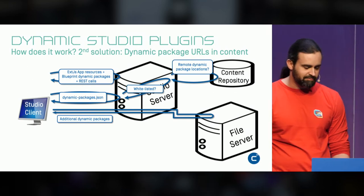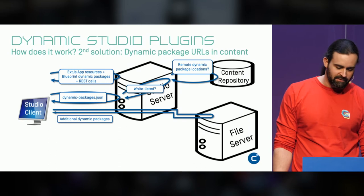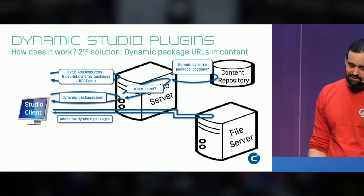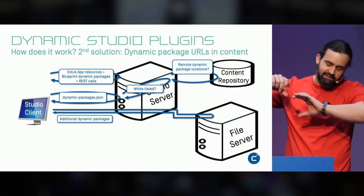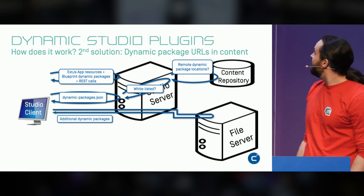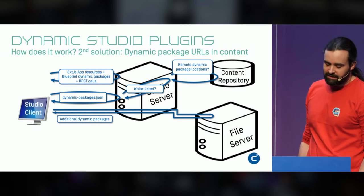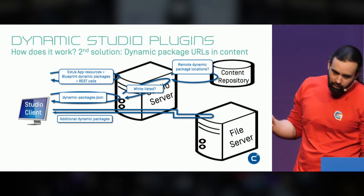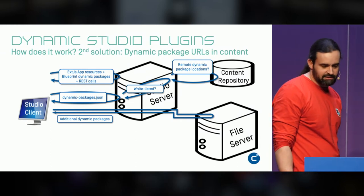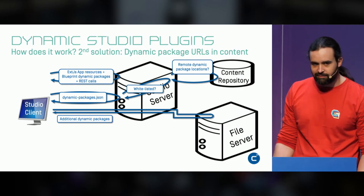I've called it a 'file server' — it's just a generic term. It might be a Tomcat, Nginx, or an S3 bucket — it doesn't matter as long as the studio can reach it and access the package resources. The only thing you have to do is take your dynamic package artifacts, upload them to a server, and add a new remote package location to the settings document. For more technical details, Eva will take over shortly.